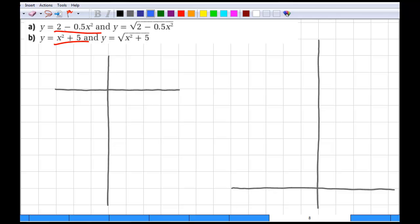So, in A here, we've got y is equal to 2 minus 0.5x squared, or if you prefer, I think about this as y is equal to negative 0.5x squared plus 2. That helps me to identify it as a quadratic that's been vertically compressed by a factor of 1 half, reflected in the x-axis and then moved up 2.